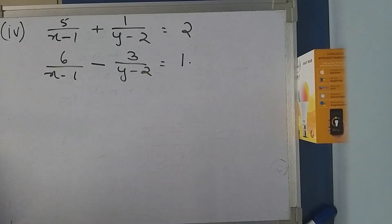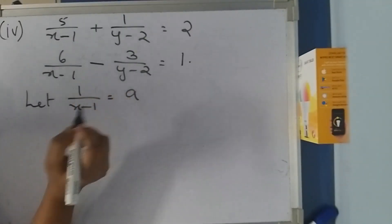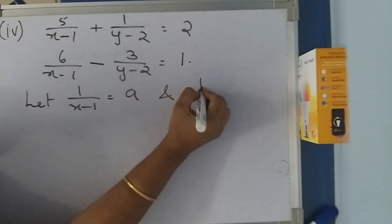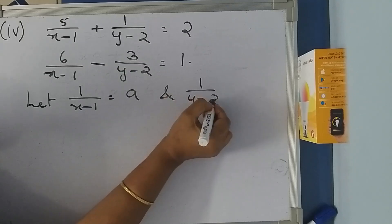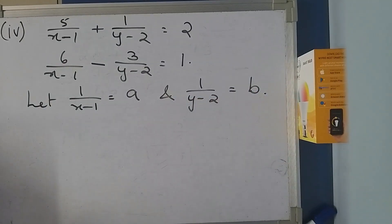You can see both denominators are the same: x-1 and y-2. So let us substitute 1/(x-1) as A and 1/(y-2) as B. Once we get A and B, we can find x and y easily.